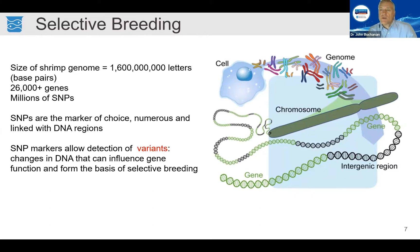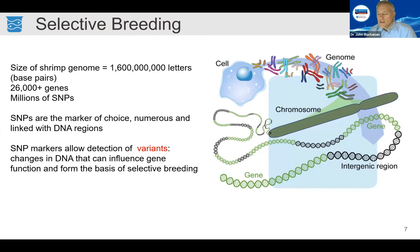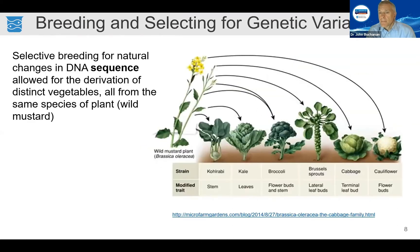SNP markers allow us to detect variants — they are a variant — and they can also help us predict when other types of variation are present in the genome. We use them both specifically and to help us infer when changes have occurred that we can use for breeding progress. Over time, selecting for phenotypic changes, breeders can make a huge difference.